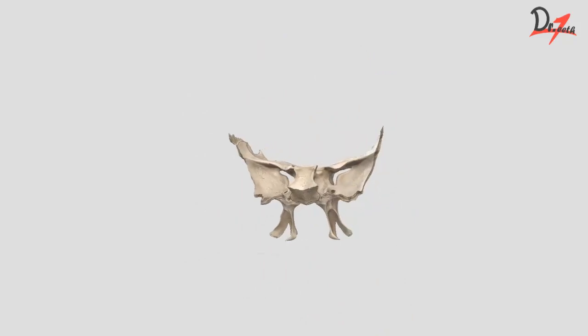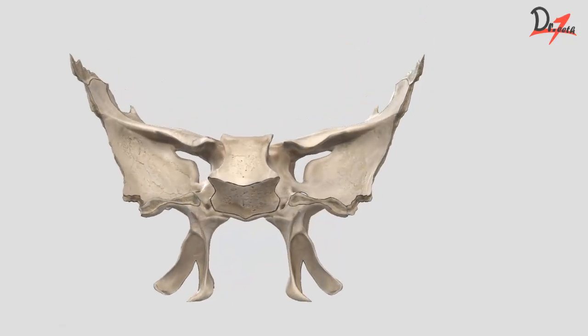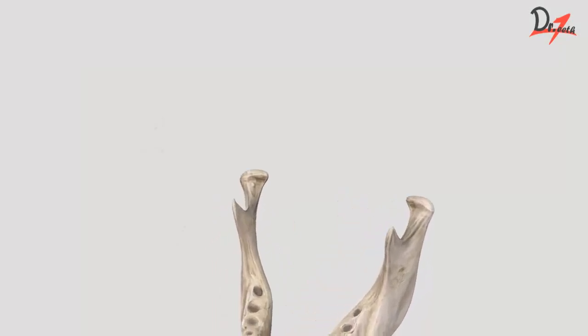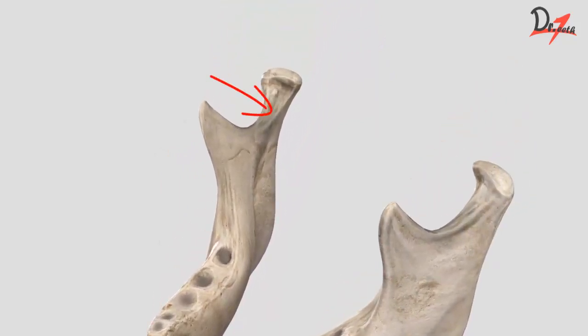Here we can see the lateral pterygoid plate — this is the lateral surface of the lateral pterygoid plate from which the lower head arises. Note the distinction: the deep head of the medial pterygoid arises from the medial surface, while the lower head of the lateral pterygoid arises from the lateral surface. Both heads of the lateral pterygoid converge as a single tendon and insert on the pterygoid fovea of the mandible, and also the adjoining articular disc and capsule of the temporomandibular joint.